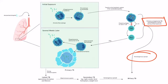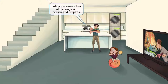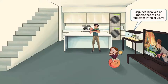Now let's continue discussing the image to memorize these details. The smoke above the pan in the kitchen helps you remember that TB enters the lower lobes of the lungs via aerosolized droplets. The cage for the family's pet snake next to the TV is a symbol for macrophages — once TB is inhaled, it enters the alveoli, is engulfed by alveolar macrophages, and begins to replicate intracellularly.